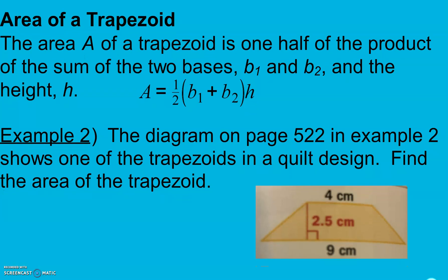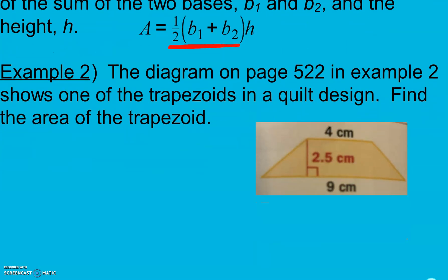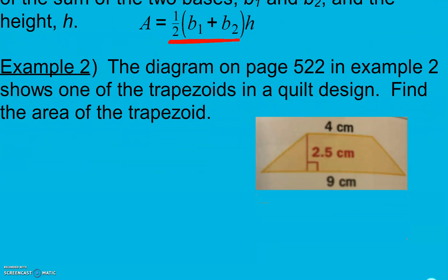The area of a trapezoid is one half the product of the sum of the two bases and the height. When we take half the sum of the two bases, we're finding the average of those two bases — we add them up and divide by two. So the formula is A equals one half times (base 1 plus base 2) times height. On page 522 there's a diagram showing one of the trapezoids in a quilt design, and this is one of the trapezoids in that quilt.